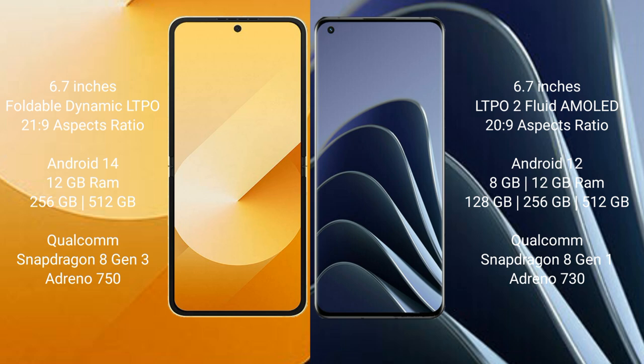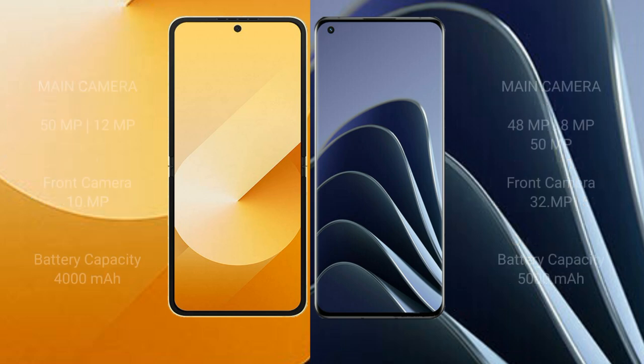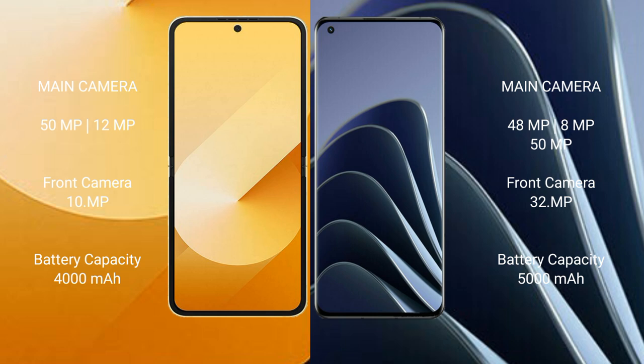OnePlus 10 Pro comes with 8GB or 12GB RAM and 128GB, 256GB, or 512GB internal storage, powered by the Qualcomm Snapdragon 8 Gen 1 processor. Samsung Galaxy Z Flip 6 features a dual rear camera setup with 12MP plus 12MP, and a 10MP front camera. OnePlus 10 Pro features a triple rear camera setup with 48MP plus 15MP, and a 32MP front camera.